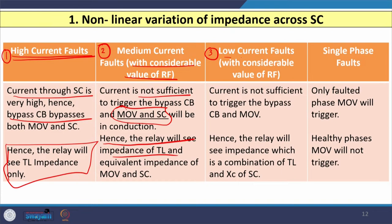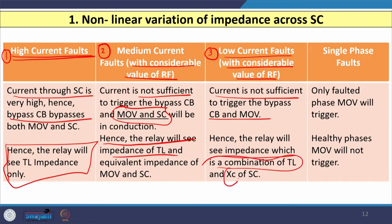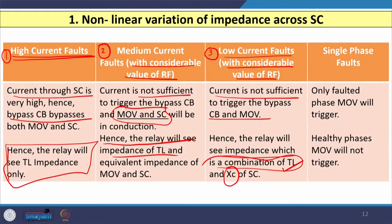The third case is when the magnitude of fault current is low — with a very high fault resistance of, say, 60, 70, 100, or 150 ohms. In this case, the current is not sufficient to trigger the bypass circuit breaker or MOV. Hence, the relay sees the impedance which is a combination of the transmission line impedance and XC, the capacitive reactance of the series capacitor — entirely different from the previous two cases.